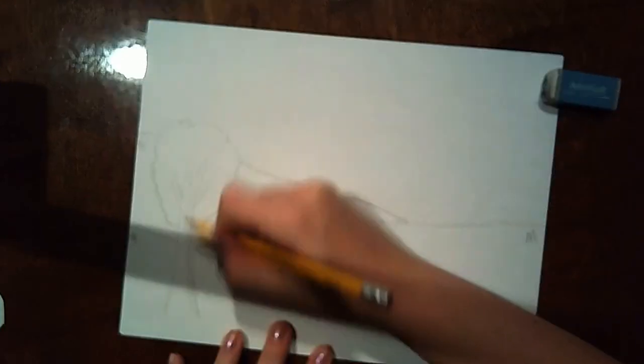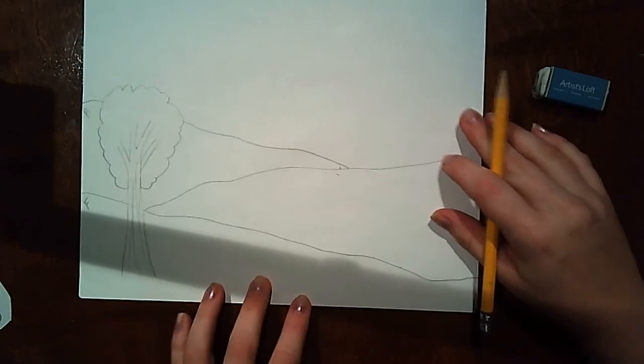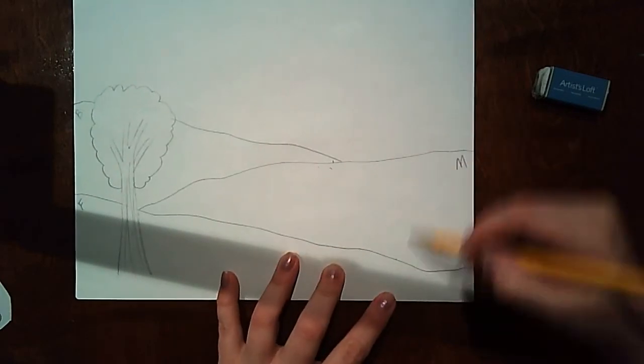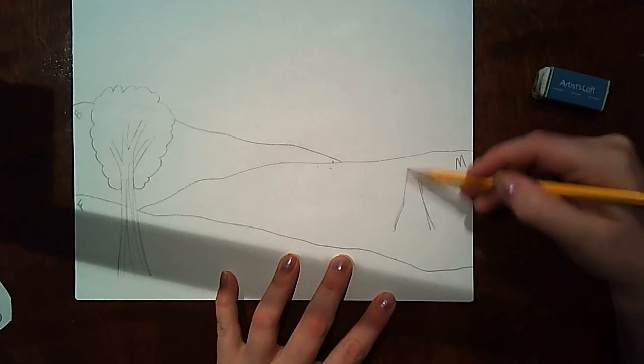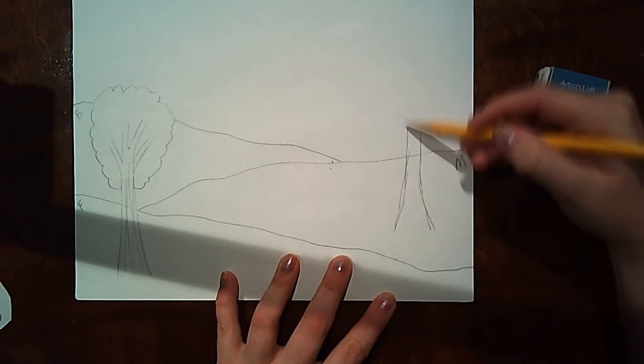We're just drawing this week. So don't worry about color. We're just kind of sketching it out. I need a tree in my middle ground. So I can start adding that. I'm just sketching a tree out.